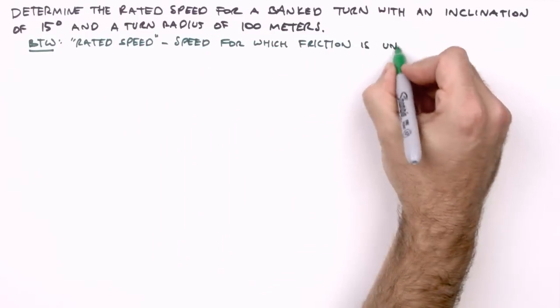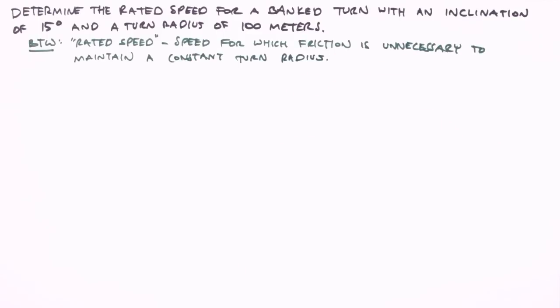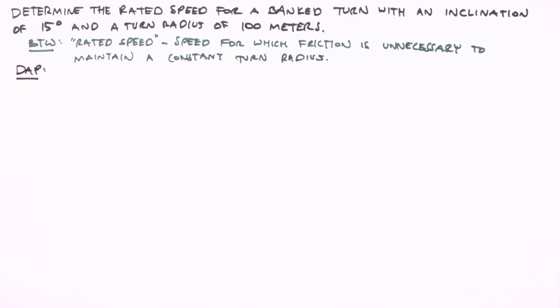The rated speed, by the way, is the speed for which friction is unnecessary to maintain a constant turn radius. In other words, if a vehicle hits a patch of ice at this speed, it will not slide off the road, but rather remain on the intended path. As always, we begin by drawing a picture.